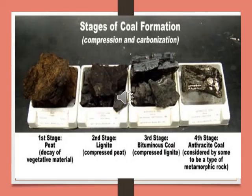The picture shows the different stages of coal formation — compression and carbonization of the material buried under the earth's crust. The first stage is called peat, which is the decay of vegetative material. The second stage is lignite, called compressed peat. The third stage is bituminous coal, called compressed lignite. The fourth and final stage is anthracite coal, considered by some to be a type of metamorphic rock.